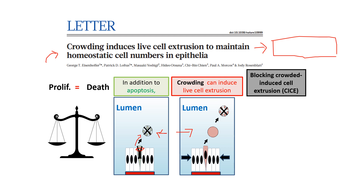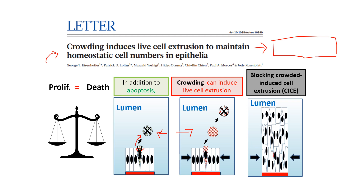The third and very important reason this paper was published in Nature is its clear implication for cancer. Every time you see a paper in Nature or Science, the high impact factor reflects a very strong connection to disease or a major implication. In this case, they found that when you block this type of live cell extrusion, you start creating early-stage cancer-like conditions — the tissue starts becoming disorganized.